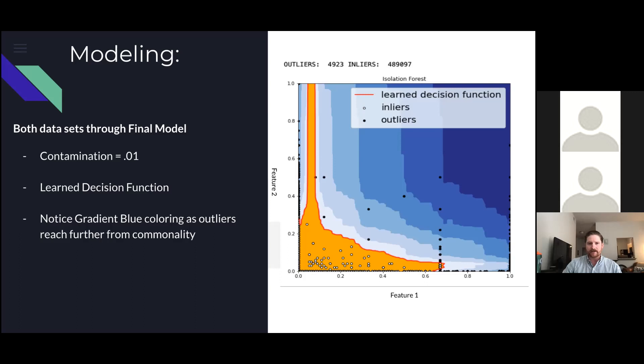The gradient blue coloring indicates the higher the anomaly score for those outliers as the shade of blue gets darker. So concluding, we found almost 5,000 anomalies for these network recordings in the status set. It worked.